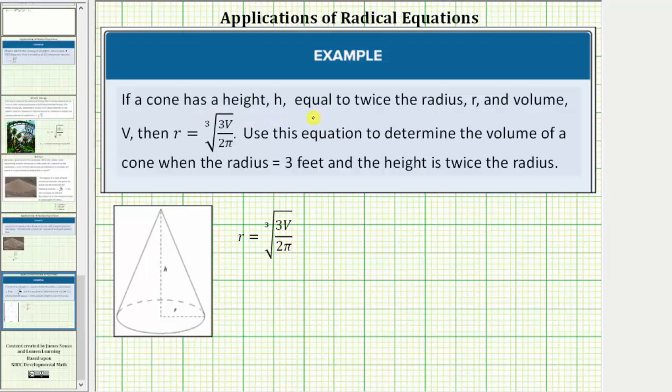If a cone has a height h equal to twice the radius r and volume v, then the radius r is equal to the cube root of three v divided by two pi.